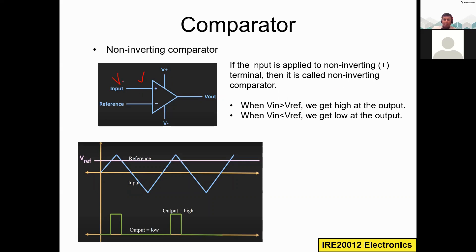Whenever V_in is greater than V_ref, we get high at the output — we get +V_sat, considered as logic high. Whenever V_in is less than V_ref, we get −V_sat at the output, considered as logic low. For example, I set the reference value as plus 5 volts. Remember, whatever parameter we are measuring — pressure, temperature, or body parameter — everything will be converted in terms of voltage. The waveform we see on the oscilloscope is a voltage or current waveform.